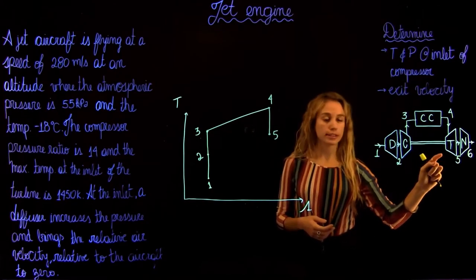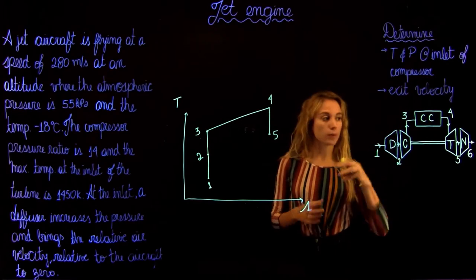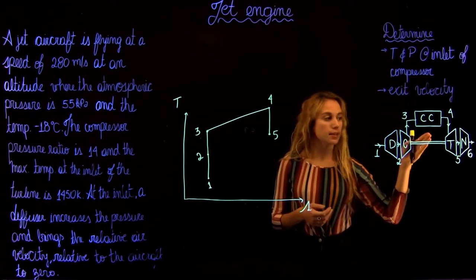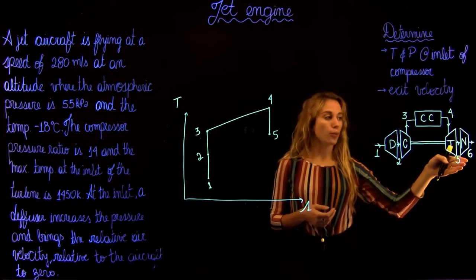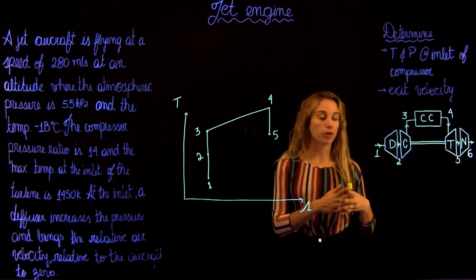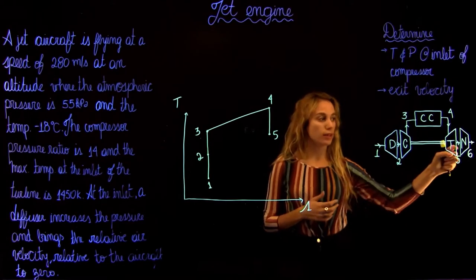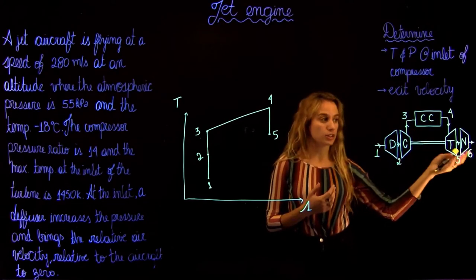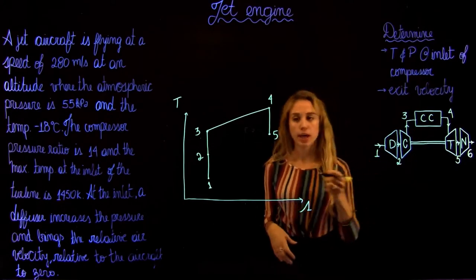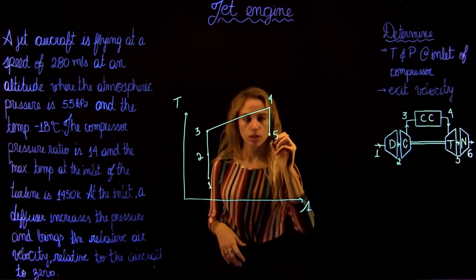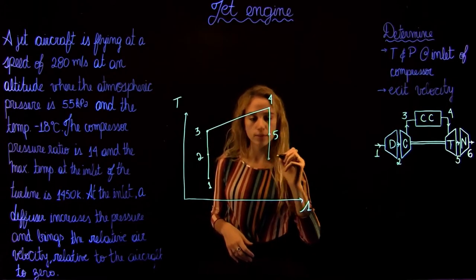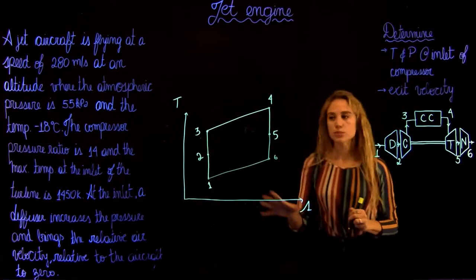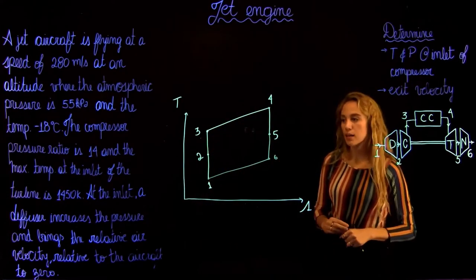After the isentropic expansion, the remaining hot gases are used to increase kinetic energy by passing them through a nozzle, where we accelerate the flow and create thrust. The exit velocity is going to be much faster than the inlet, so it's going to make the aircraft move. In our TS diagram, we're going to go back to state 1.